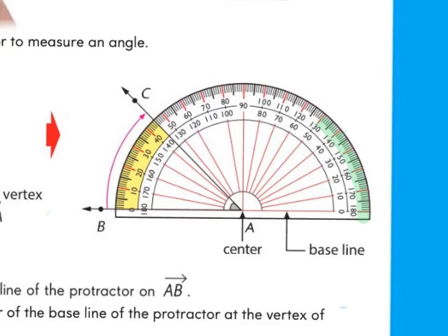Once everything is lined up — baseline with your ray, vertex at the center point, and you've decided which scale to use — you have to be very precise when you read the scale on the protractor. It's not always easy to do. You follow up the angle until you meet the other ray. In this case, ray AC hits at about the 45-degree mark, right halfway between the 40 and the 50. So we would say that this angle measures 45 degrees.